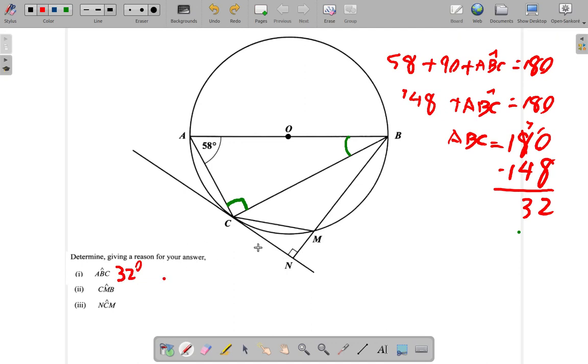So that's 32 degrees. So I get 32 degrees for angle ABC. Now after that, angle CMB. Angle CMB, what could that angle be?